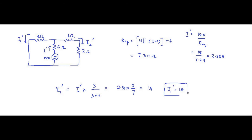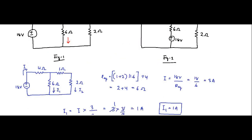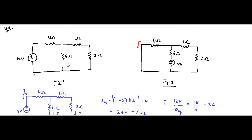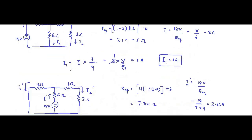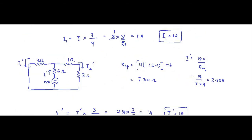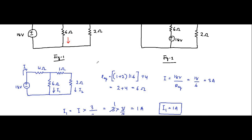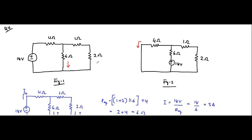In the first figure, I1 — the current flowing through the 6 ohm resistor branch — was calculated as 1 ampere, where the 18 volt source was in the first (4 ohm) branch. When the 18 volt source is shifted to the second (6 ohm) branch, the current flowing through the first (4 ohm) branch is also 1 ampere. These two currents are equal, so the reciprocity theorem is valid.